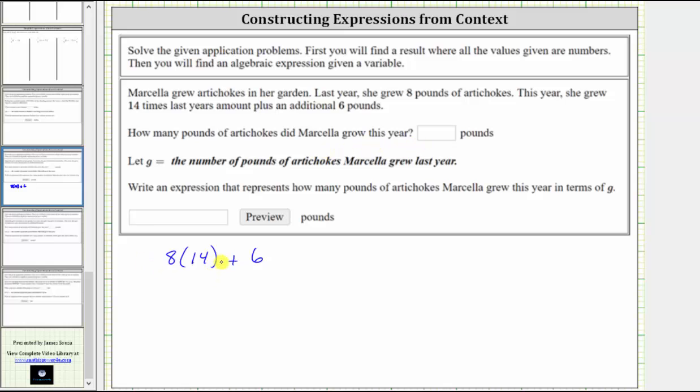14 times eight equals 112, giving us 112 plus six. 112 plus six equals 118. We now know Marcella grew 118 pounds of artichokes this year.